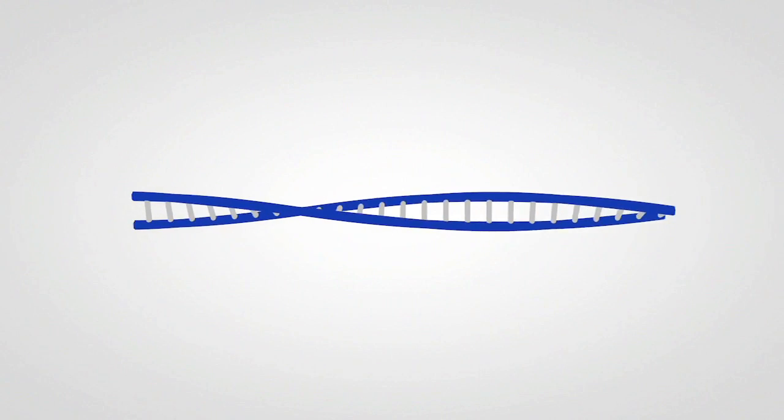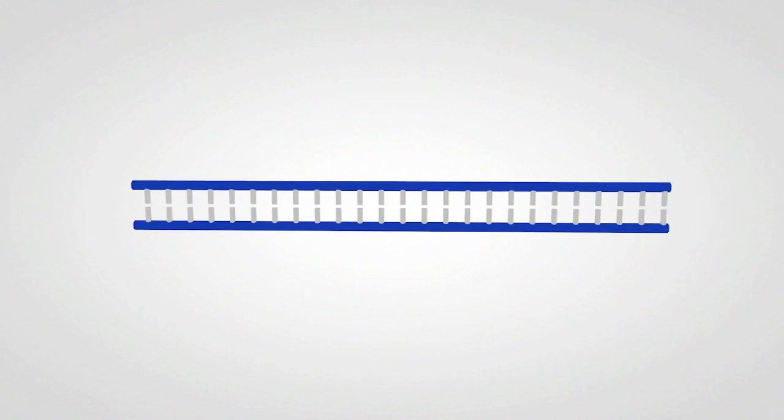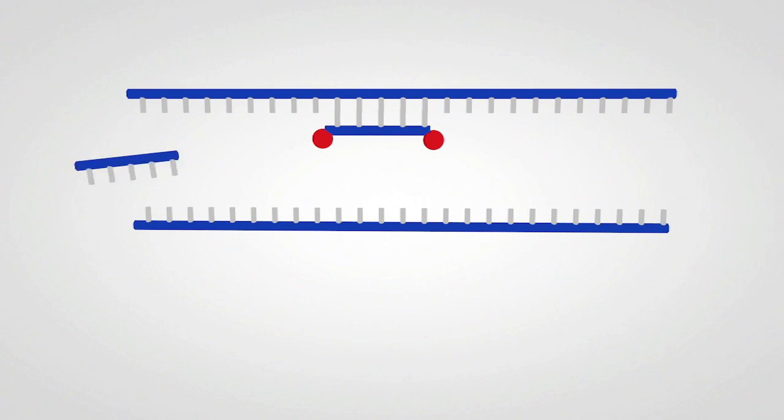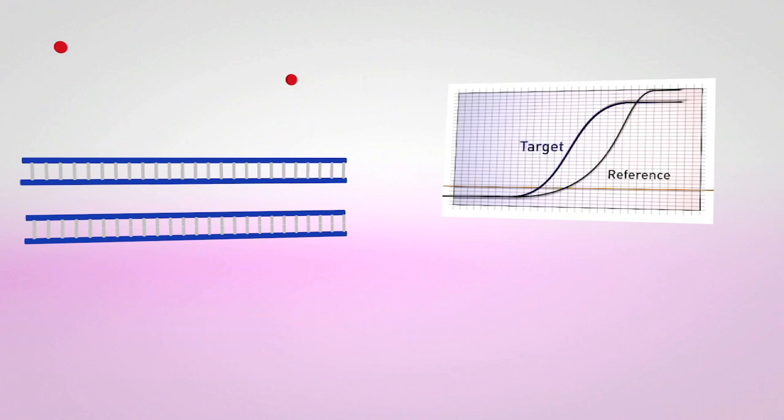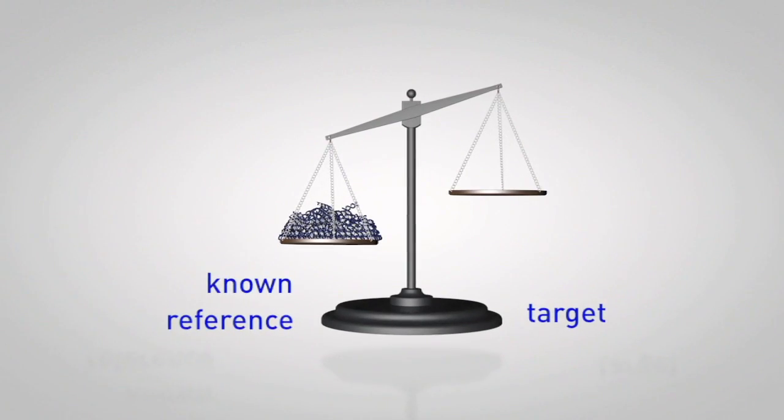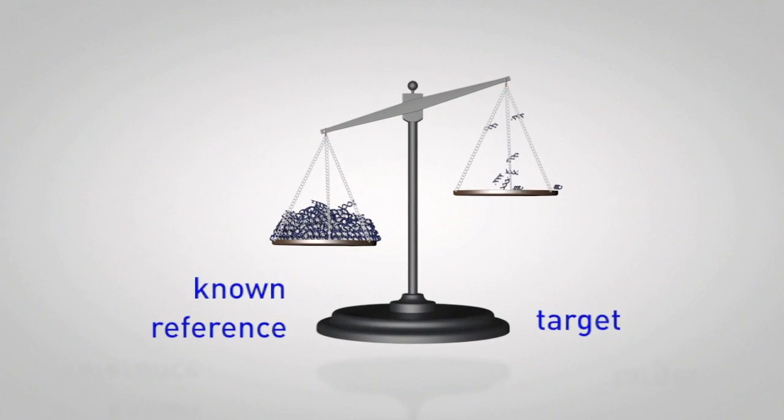This is done through the use of primers and a thermostable DNA polymerase. By monitoring this amplification in real-time, quantities can be measured with great accuracy. Since this is compared to an external reference, measurements are relative quantifications.